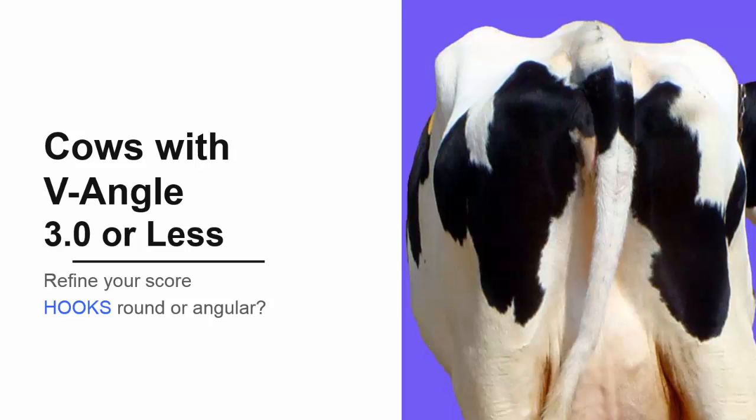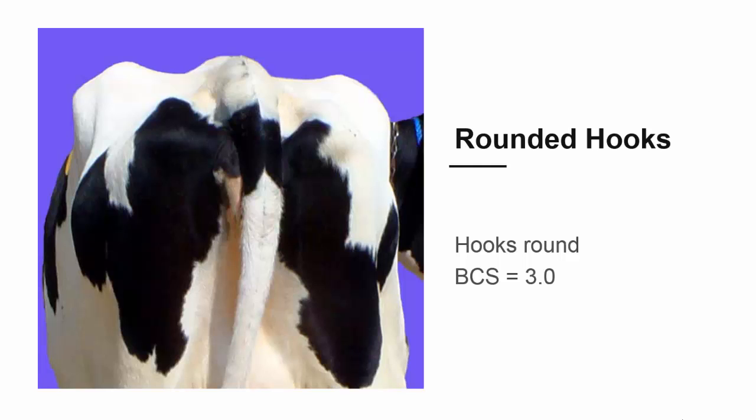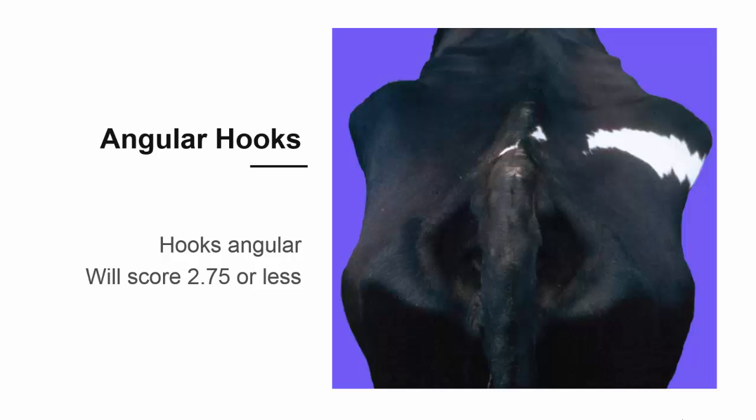We'll start with the thinner group and refine your score of 3 or less. From the back of the cow, take a close look at the hip bones or hooks. Are they round or angular? If the hooks are rounded, the cow receives a body condition score of 3.0. If the hooks are angular, the cow will receive a body condition score of 2.75 or less.